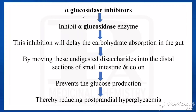Alpha-glucosidase inhibitors inhibit the enzyme alpha-glucosidase, delaying carbohydrate absorption in the gut by moving undigested disaccharides into the distal sections of the small intestine and colon, thereby preventing glucose production and reducing postprandial hyperglycemia.